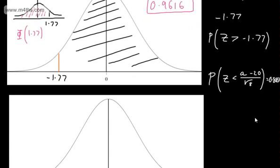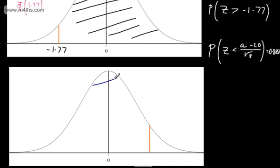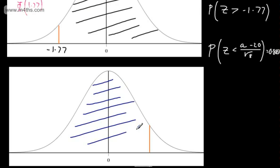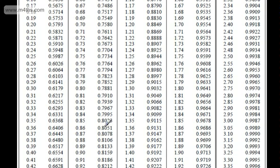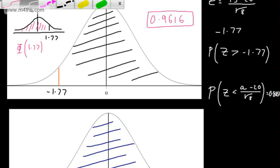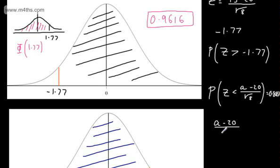Looking up 0.8051 in the standard normal table, we find the corresponding z-value is 0.86. So we can state that (A minus 20) divided by root 8 equals 0.86.